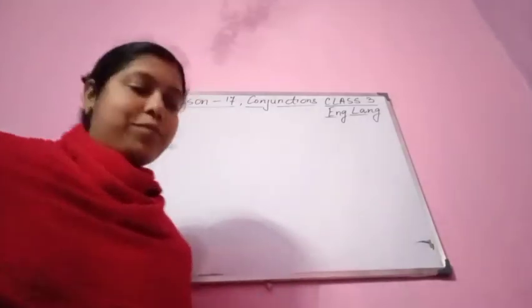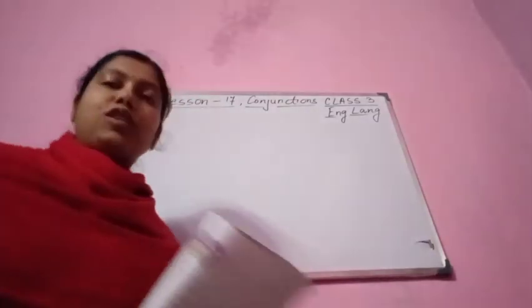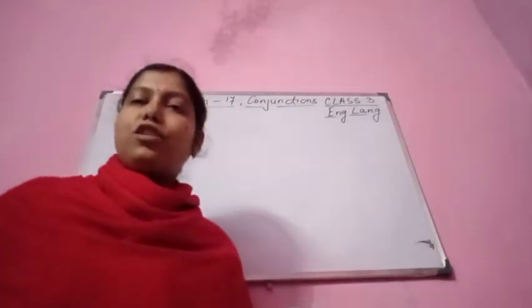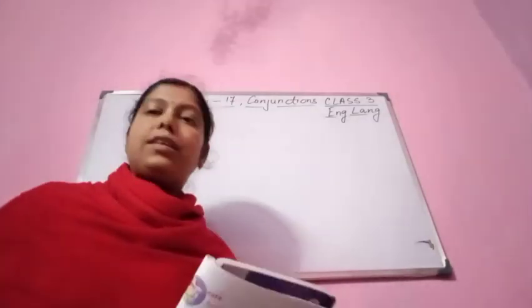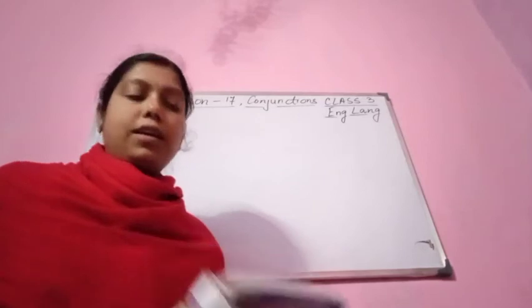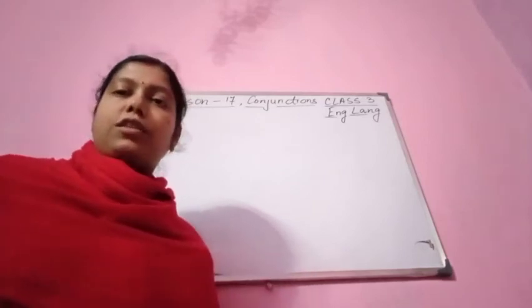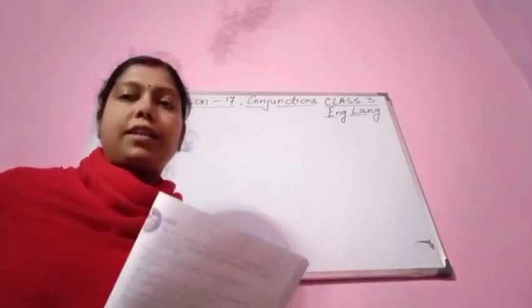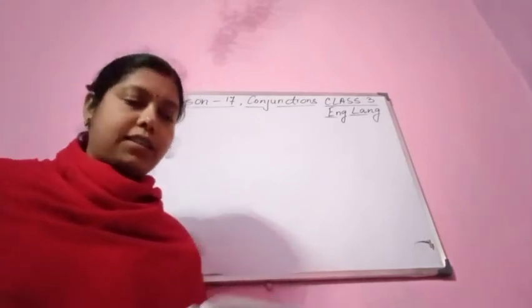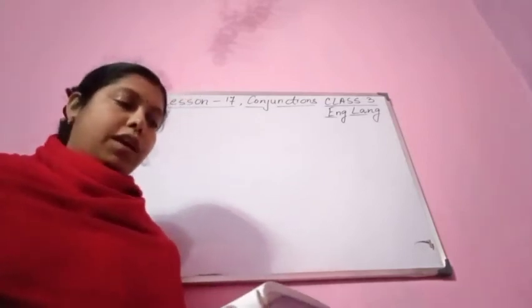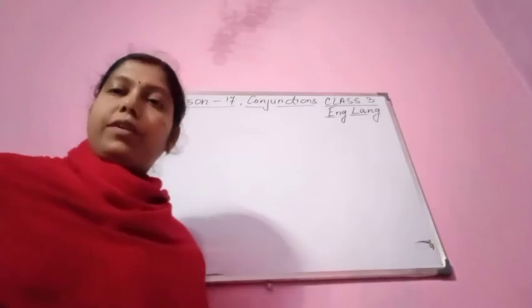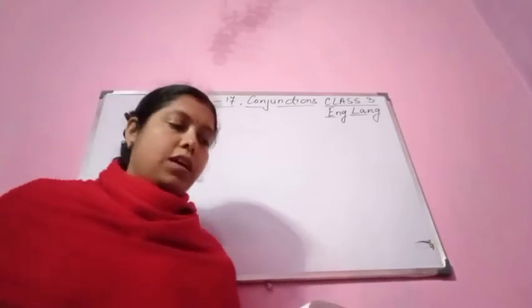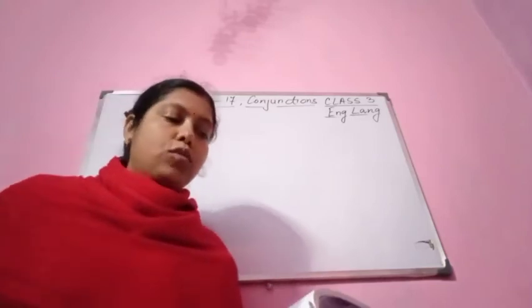Good morning children. Welcome to my class. In Class 3 English language we were doing Lesson 17 — this is conjunctions. We have already done this lesson in a live class, so once again we are going to do this.